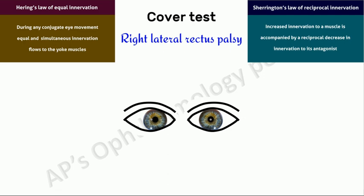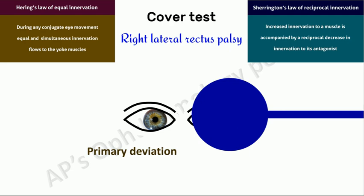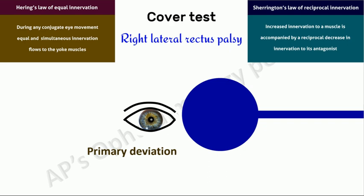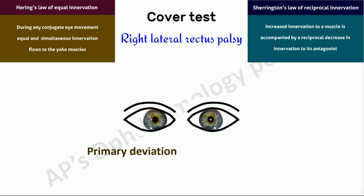This deviation of the affected eye in primary position with the normal eye fixing is referred to as the primary deviation. When the right eye is forced to take up fixation by covering the normal left eye, since the right lateral rectus is weak, extra innervation has to flow to the right lateral rectus to make it abduct. By Hering's law, the same extra innervation also flows to the left medial rectus, which is the yoke muscle of the right lateral rectus. This extra innervation causes the left medial rectus to overact, resulting in a deviation that is greater than the primary deviation. This is termed secondary deviation.